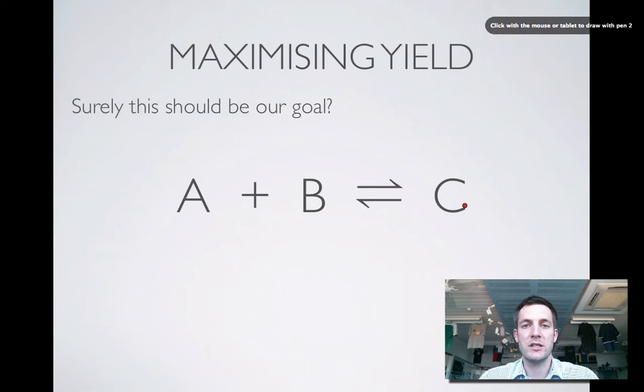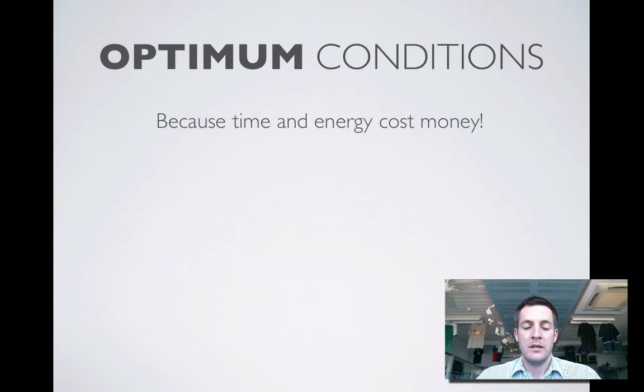It's not simply a matter of setting the conditions up so that we make as much C as possible. We're going to need to consider some other things as well, such as the fact that if your reaction takes a long time to reach equilibrium, even if you're going to make a lot of your product, you won't be able to be selling it. Also, if you're going to have to be heating your system or building very strong equipment to contain your equilibrium process, that's going to cost you money and eat into your profits. So there's a balancing act here going on.